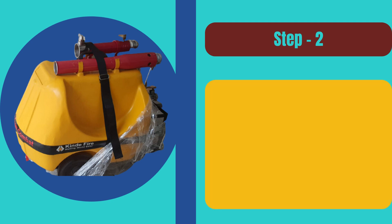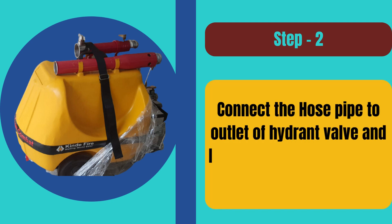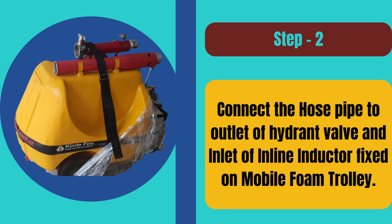Step 2: Connect the hose pipe to outlet of hydrant valve and inlet of inline inductor fixed on mobile foam trolley.